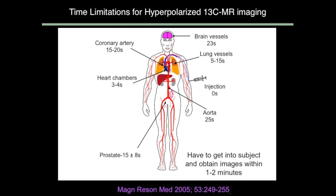What are the practical time limitations for the person? These are estimates of the time it takes if you inject something into the arm intravenously to reach various components of the body. It goes very rapidly to the heart — if you want to do heart applications, that's really very accessible. For the brain, we're typically talking about 20 seconds to get there. The prostate, which was the first application we considered, takes about 15 seconds. That's a very small amount of time, so you have to optimize everything in order to make it work.